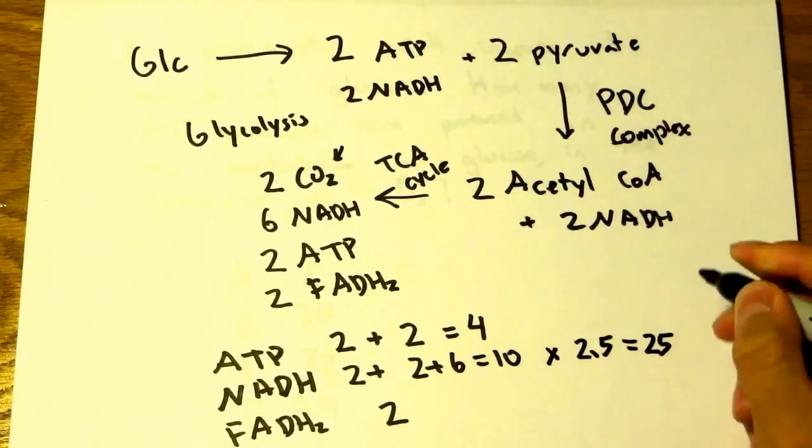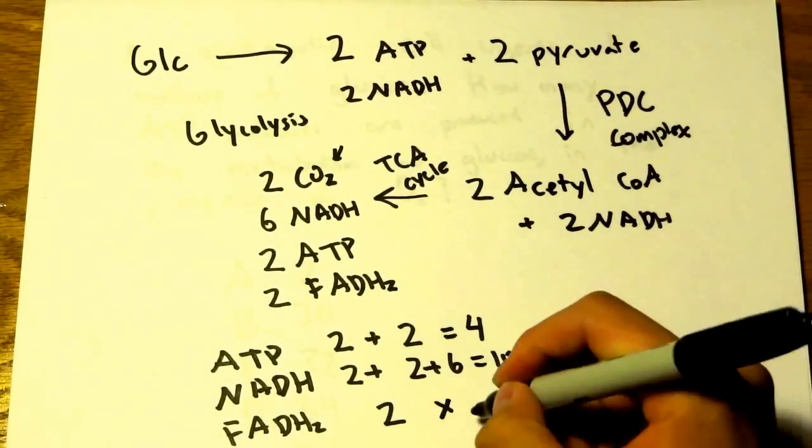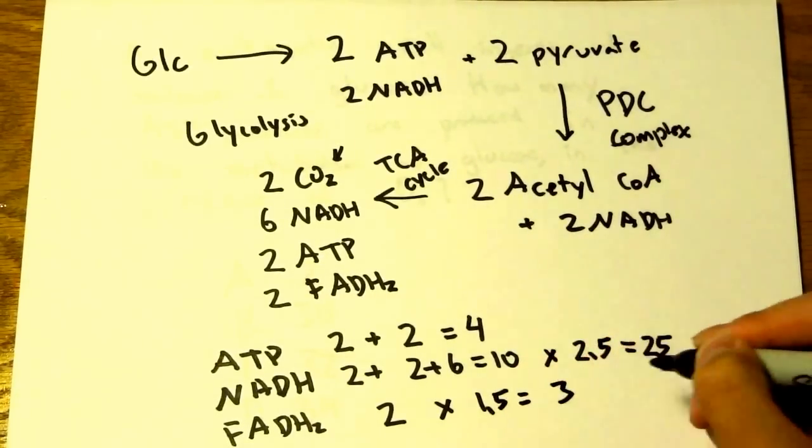So that's 25 ATP total from NADH. For every 1 FADH2, we get 1.5 ATP, so that's 3 ATP.